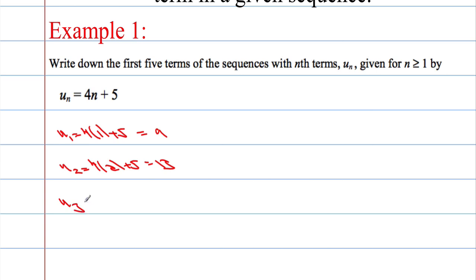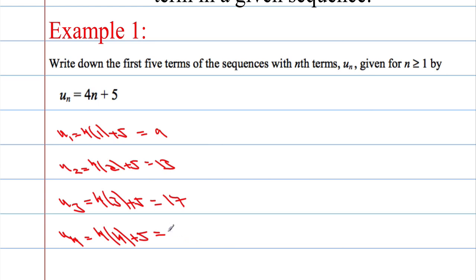So u(3), the third term, is going to be 4 times 3 plus 5. 12 and 5 is 17. u(4) is 4 times 4 plus 5. 16 and 5 is 21. And then finally the fifth term, u(5), will be 4 times 5 plus 5, which is 25.